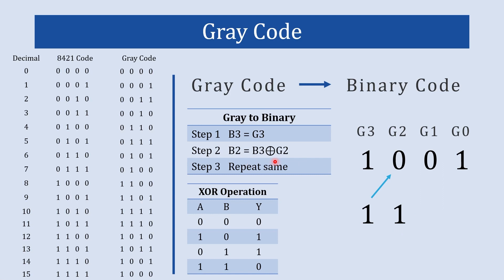Continuing, in step three, b1 = b2 XOR g1: both inputs are different, so b1 = 1. Then b0 = b1 XOR g0: both inputs are the same, so b0 = 0. The binary equivalent is 1110. Let's verify: gray code 1001 corresponds to decimal 14, and the binary equivalent of 14 is 1110. Correct!